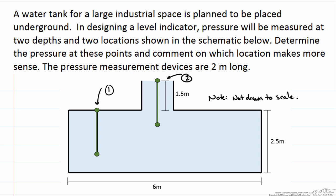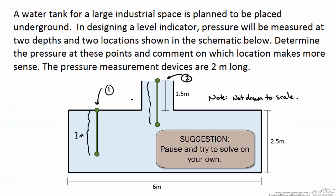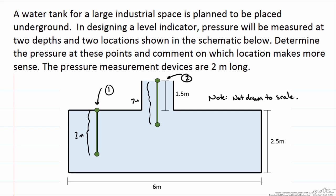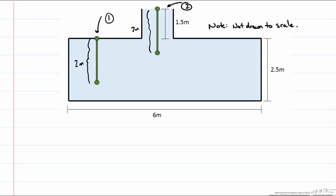We want to determine the pressure at both points of the meter and comment on which location makes more sense. We are told that the pressure measurement devices are 2 meters long. So we could calculate the pressure and report it as either a gauge pressure or an absolute pressure.